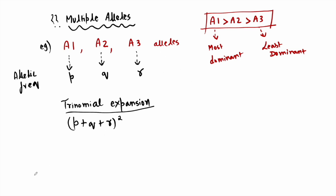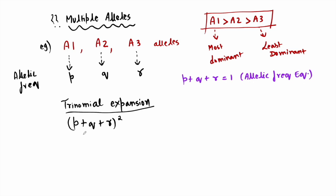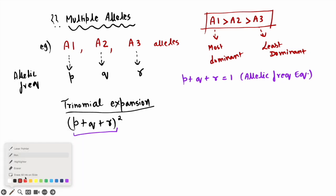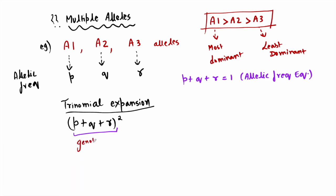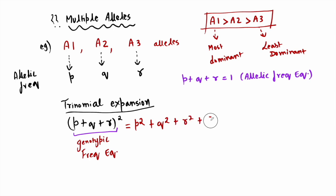At the level of allelic frequency equilibrium, we simply write p + q + r = 1. But for genotypic frequency equilibrium, the trinomial expansion gives: p² + q² + r² + 2pq + 2pr + 2qr = 1, because p + q + r was also equal to 1.